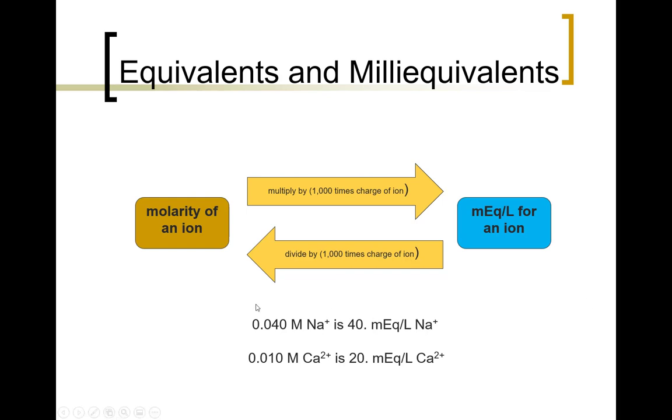If we wanted to go the other way, we would be taking 40 and dividing it by 1000. Calcium here has a 2 plus charge. So in order to convert molarity to milliequivalents per liter, we're going to take this and multiply it by 2000, two times 1000 here. So 0.010 times 2000 is 20 milliequivalents per liter of calcium.